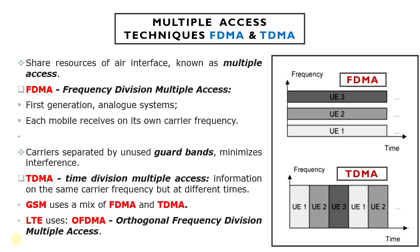In Time Division Multiple Access, or TDMA, mobiles receive information on the same carrier frequency but at different times. GSM uses a mix of frequency and time division multiple access, in which every cell has several carrier frequencies that are each shared among eight different mobiles.